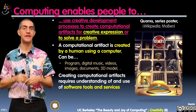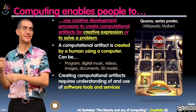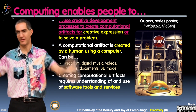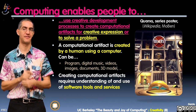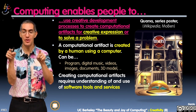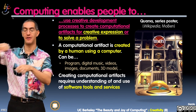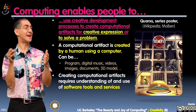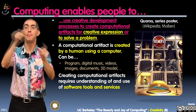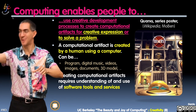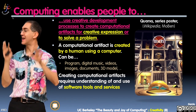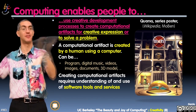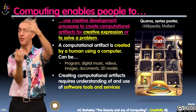A computational artifact — a CA — is something that a human uses a computer to build. One great example is software. In this class, programming is obviously emphasized, so maybe software is an artifact. Here's the cool thing: let's say you make a drawing program — an auto-drawer that makes random things. The program you wrote is a CA, a computational artifact. But the picture that your program drew is also a computational artifact, even if you didn't directly draw it — you had your hand in what made it.